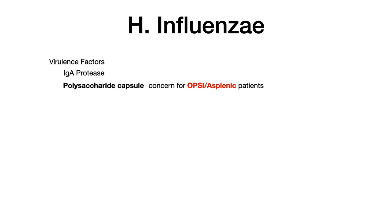The more high-yield virulence factor is the polysaccharide capsule. This causes concern for patients who don't have a spleen or are functionally asplenic — we're concerned about OPSE, overwhelming post-splenectomy infection. The polysaccharide capsule allows the bacteria to evade the two-step process of opsonization and phagocytosis, so in patients with no spleen who lack splenic macrophages, this bacteria can cause an invasive and overwhelming infection.